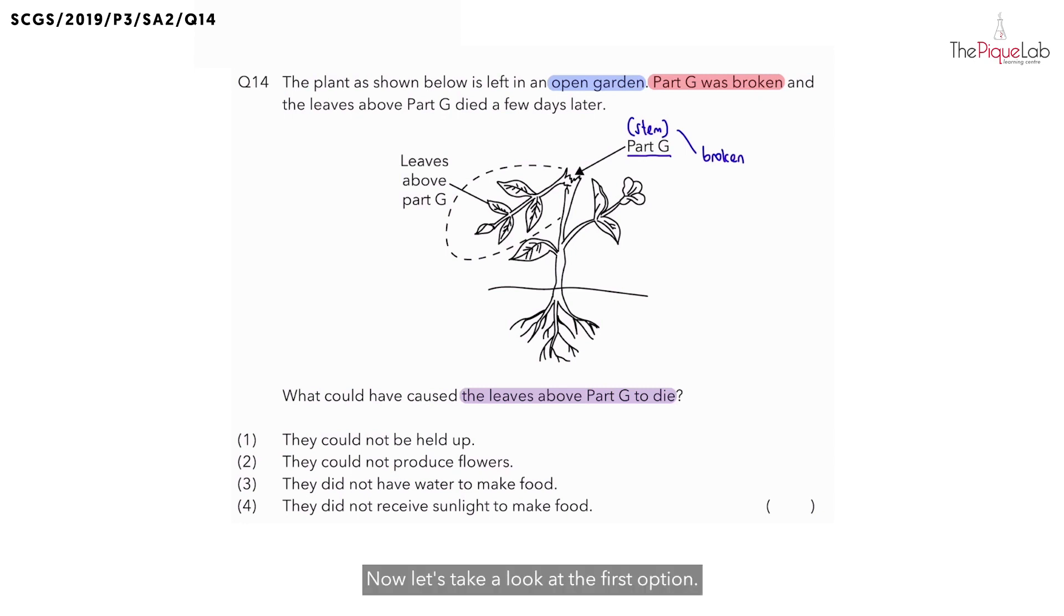Let's take a look at the first option. They said that the leaves above part G could not be held up. Is it true that when the leaves are not held up, the leaves will die? Answer is no. I know what some of you might be thinking. Some of you might think that option one is correct because if the leaves cannot be held up, that means they cannot trap sunlight for photosynthesis to make food.